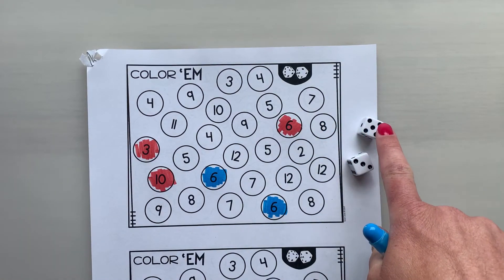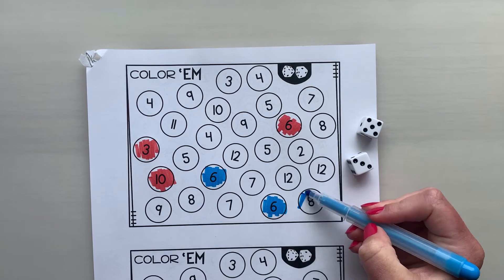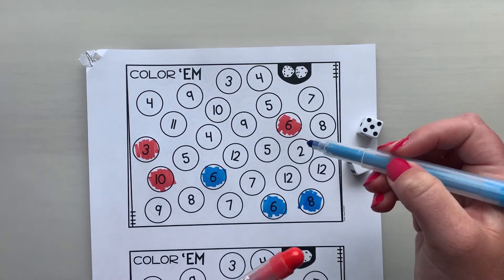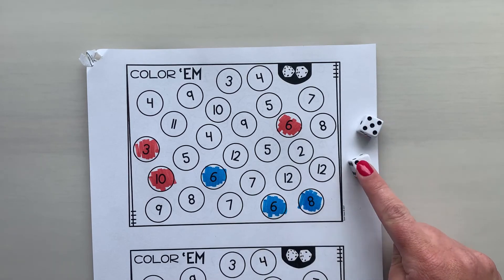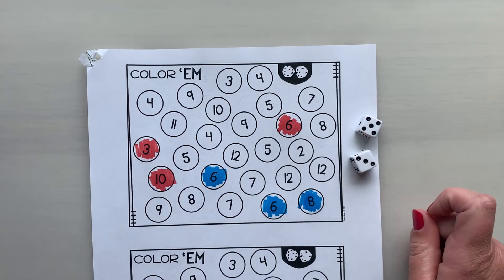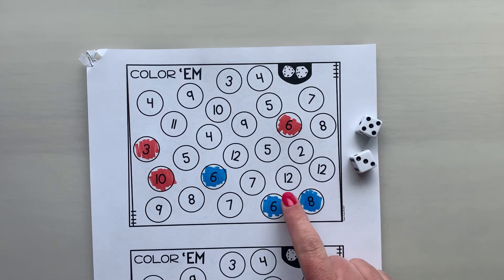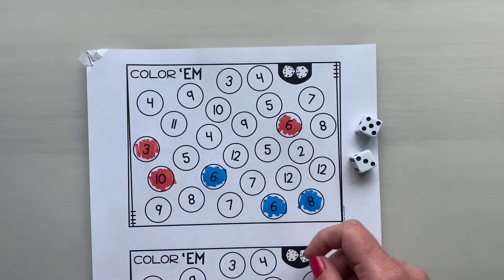So three plus five is eight. And remember if you're further along in the game you may come to the point where the sum of the two dice that you added together is filled in. And if that's the case, if they've already all been colored in, then you just skip your turn.